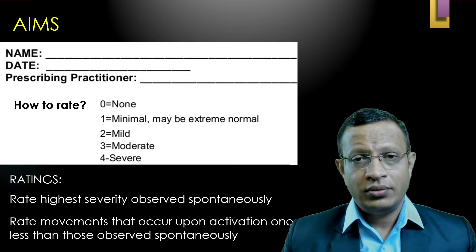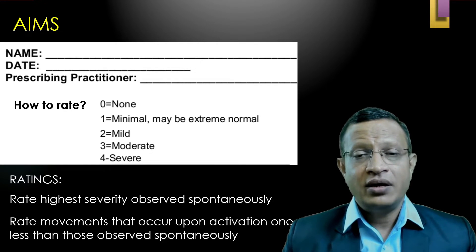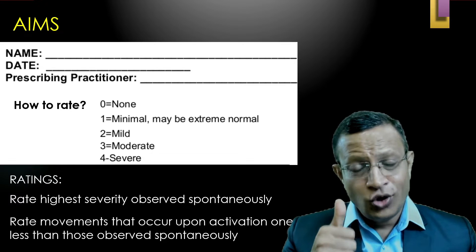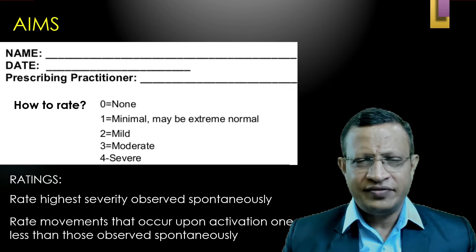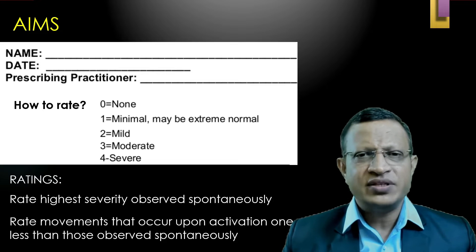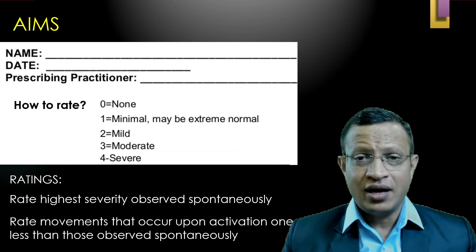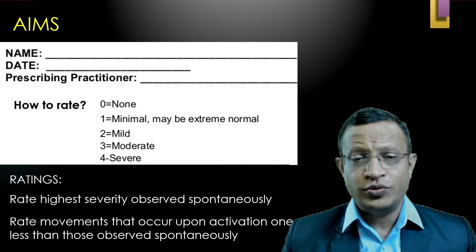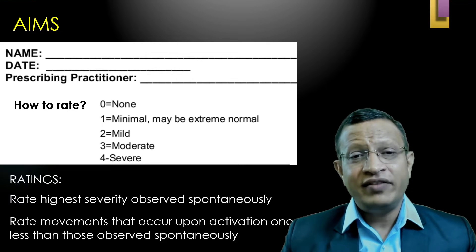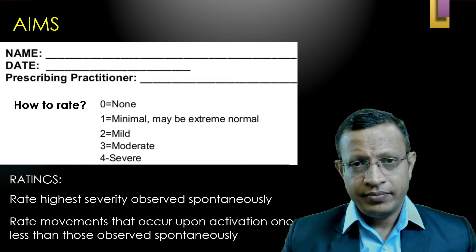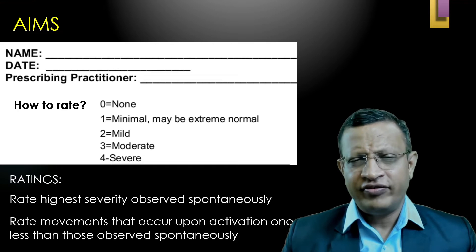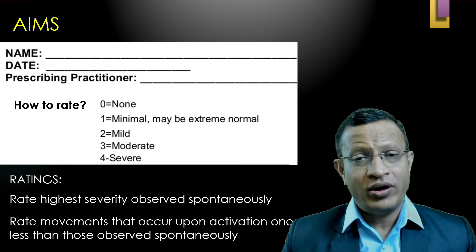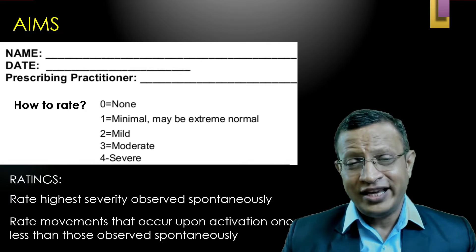As soon as you start, you need to record demographic details — name, date, and prescribing practitioner. You need to rate on five codes: 0 means no abnormal movement; 1 is minimal, without impairing any daily activity; 2 is mild, which very rarely comes in the way of functioning; 3 is moderate; and 4 is severe. Rate the highest severity when observing movements spontaneously. However, if you use any activation procedure — such as thumb tapping, clenching of fist, or clenching of teeth — you need to score one level less. So if a patient scores 3 (moderate severity) on activation, you score 2 (mild).